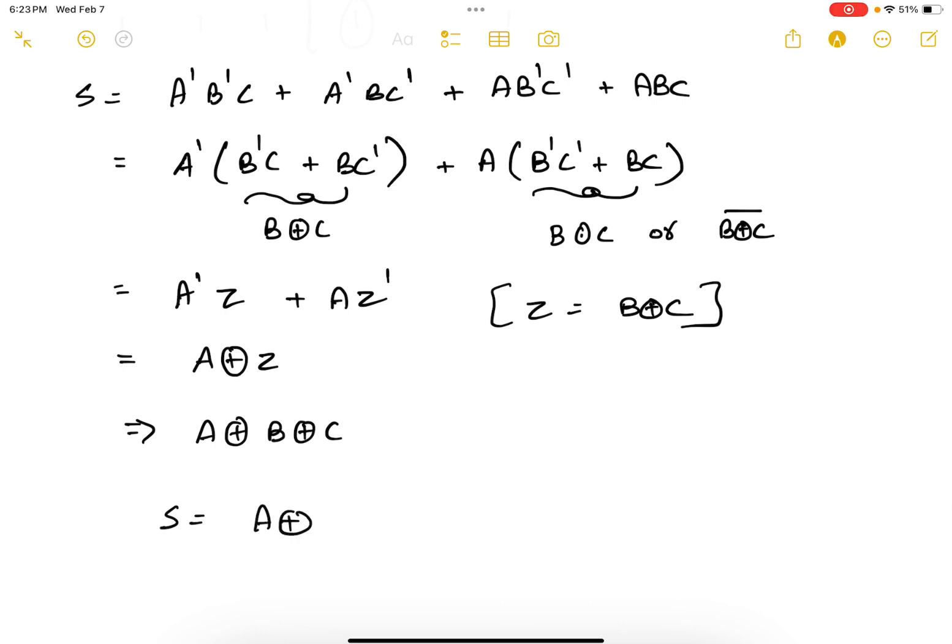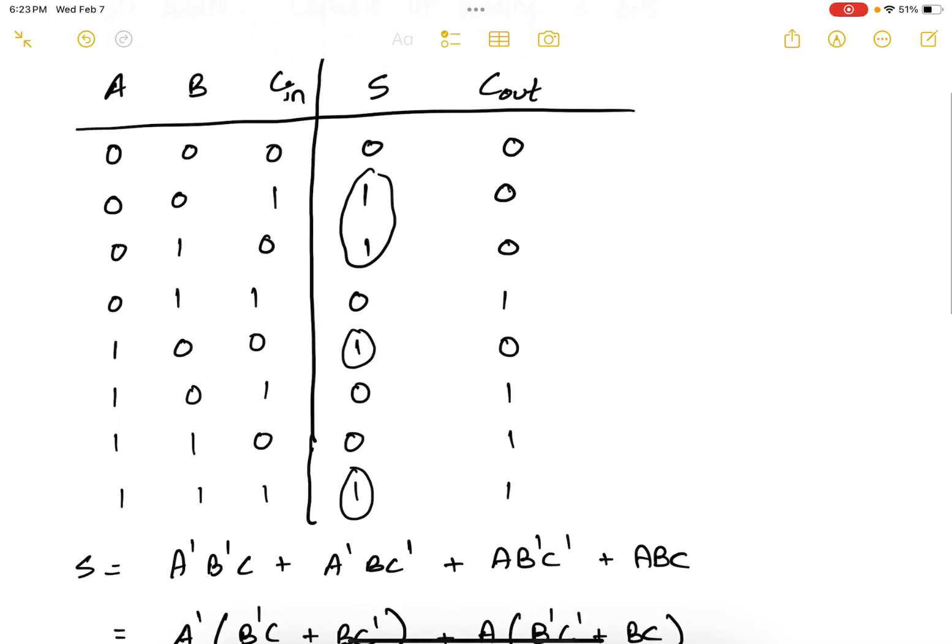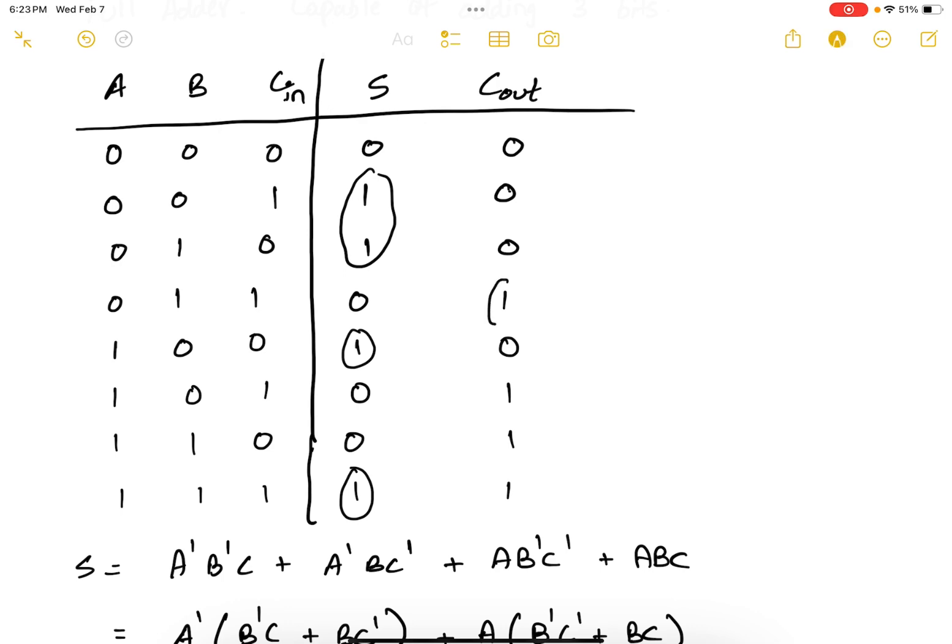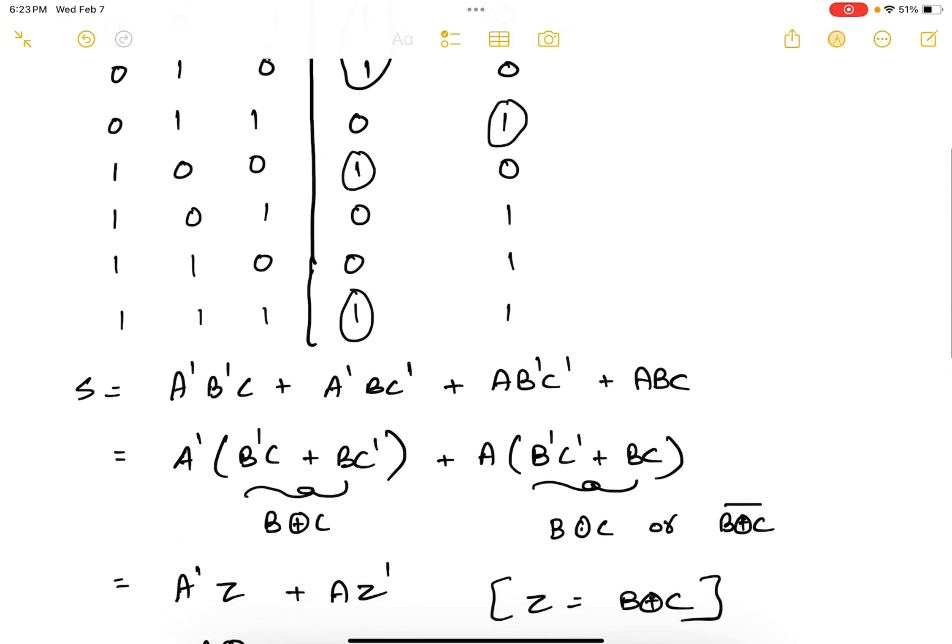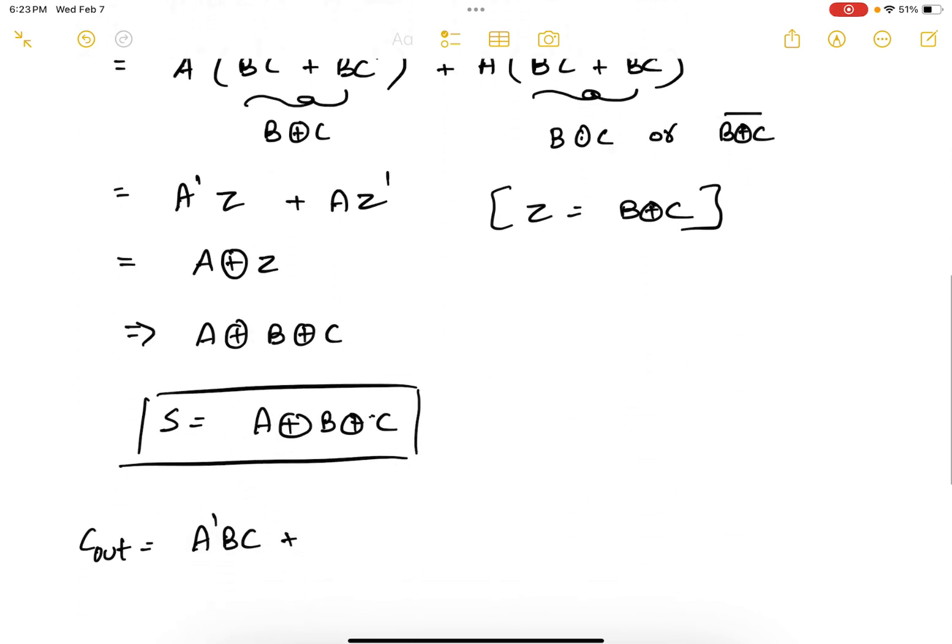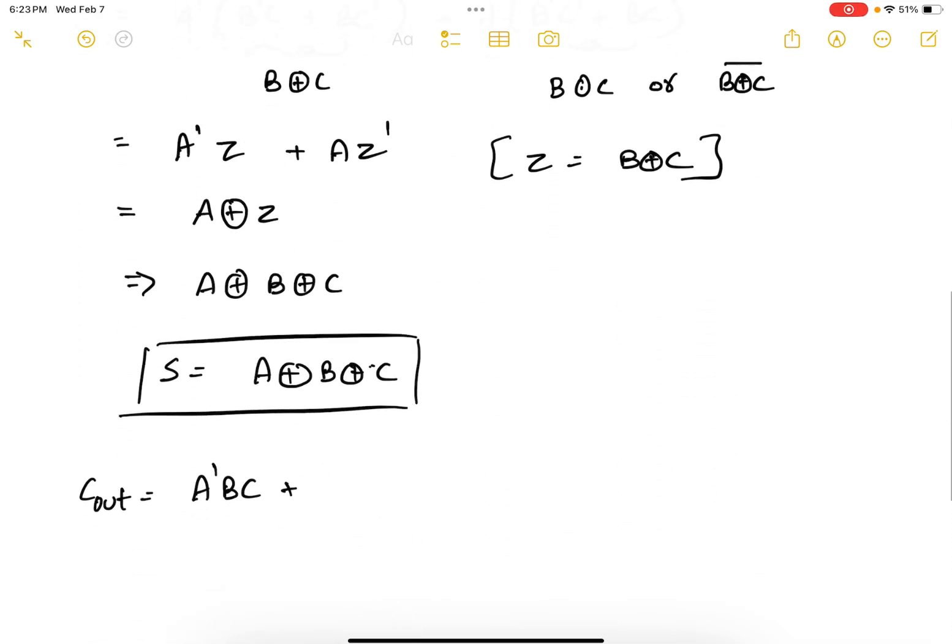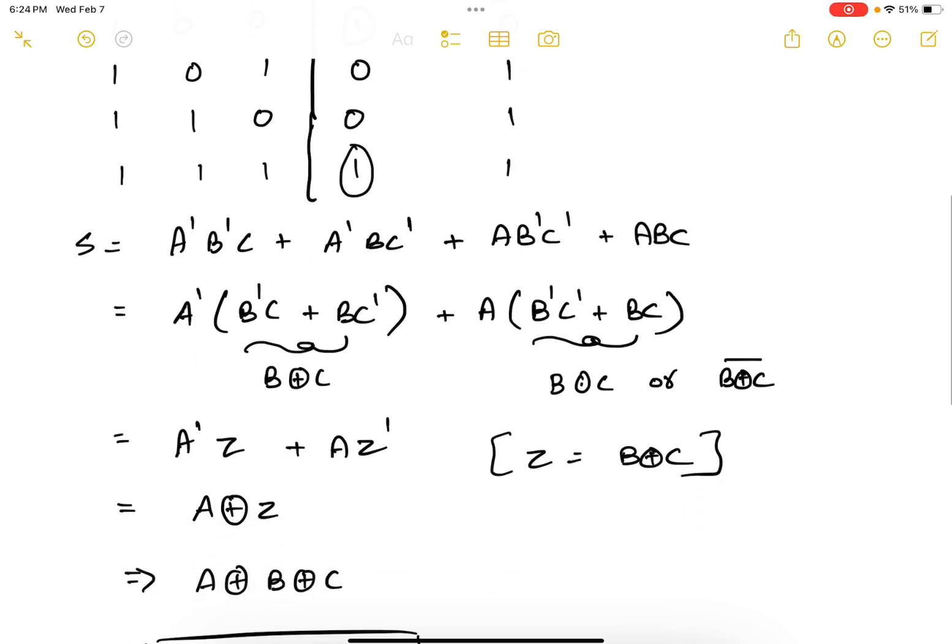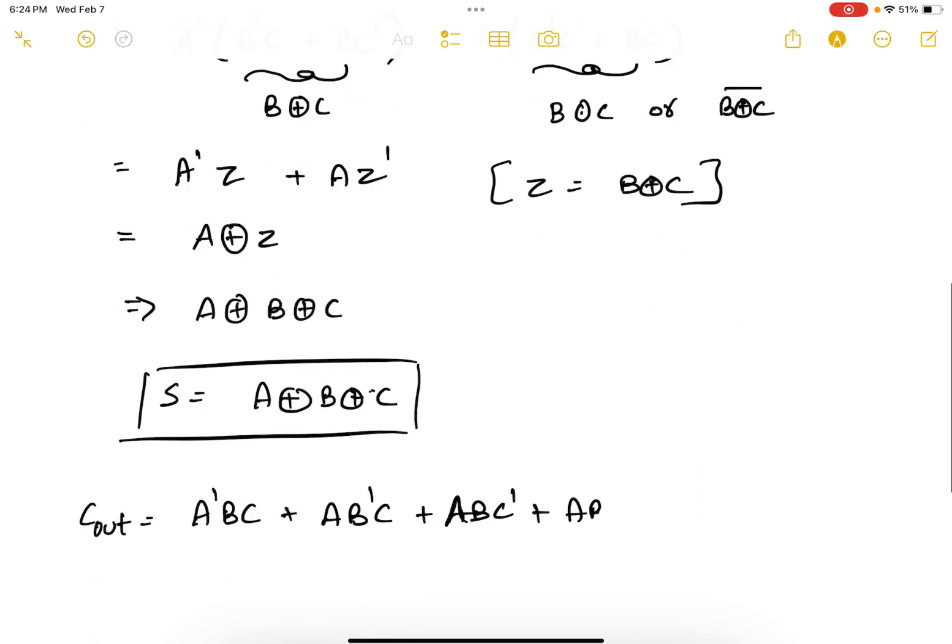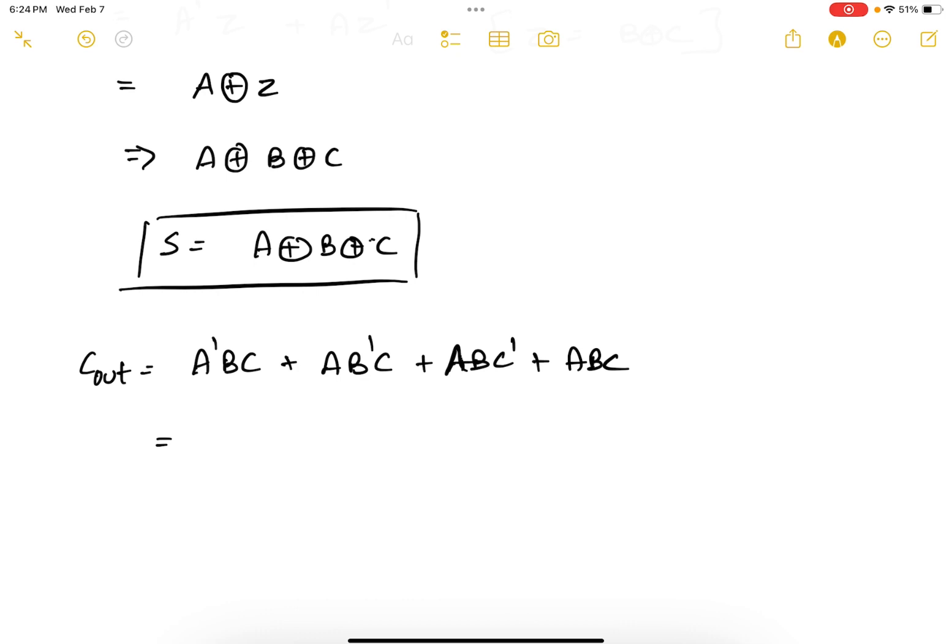Let's try to come up with the equation for C out. C out will be A' B C or A B' C or A B C' or A B C. Let's try to simplify this equation. As you can see from these two terms I can take A B as the common parameter.